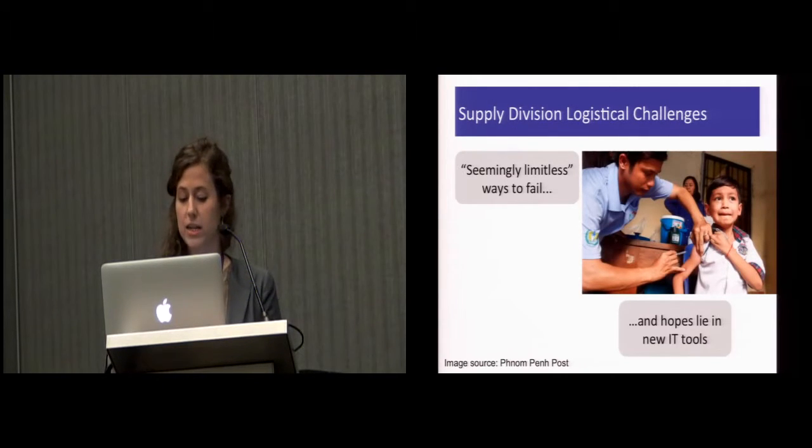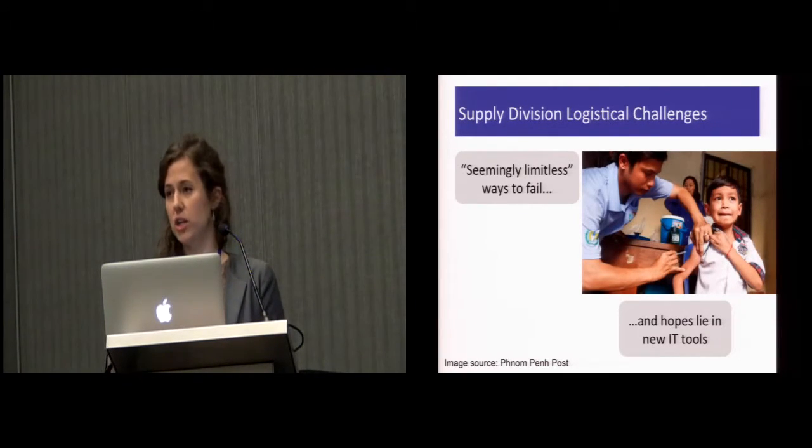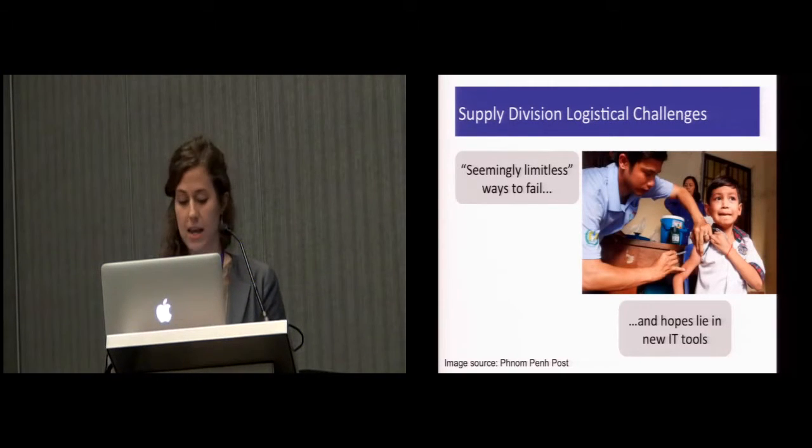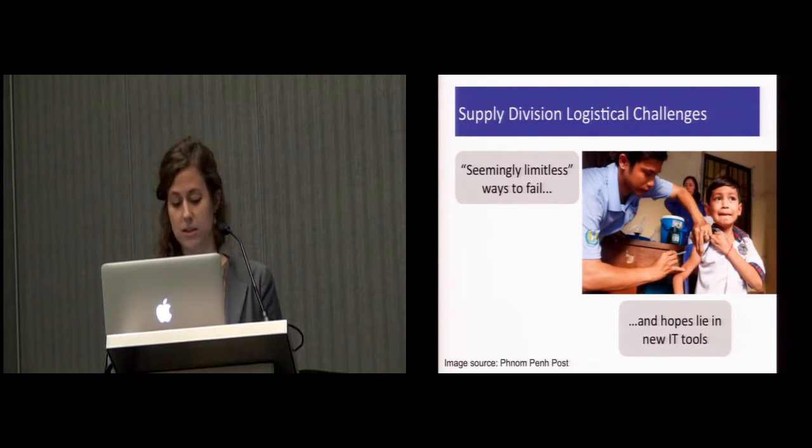Highlighting the challenging nature of their work, a UNICEF employee told me that there are seemingly limitless ways that they can fail. These failures include stockout, heat or cold damage, demurrage, expiration, breakage, wrong documentation, or any kind of delay. These failures have real stakes. A stockout of a vaccine means that kids aren't getting vaccinated and they might not return when the vaccines are back in stock.